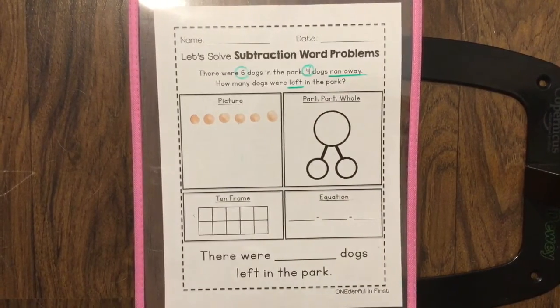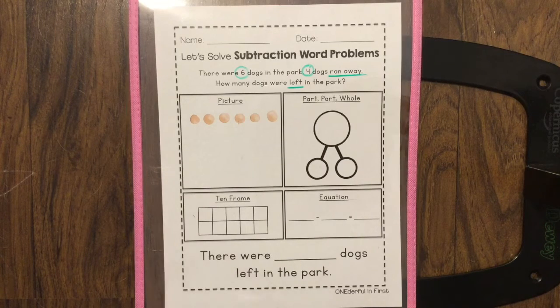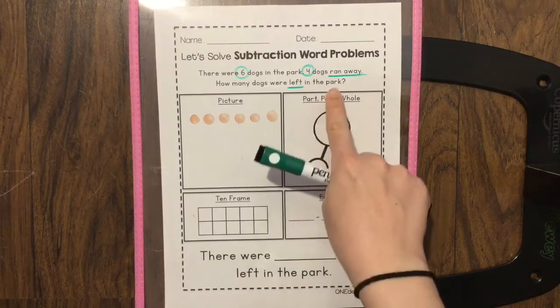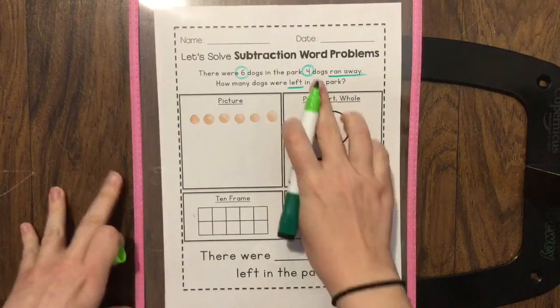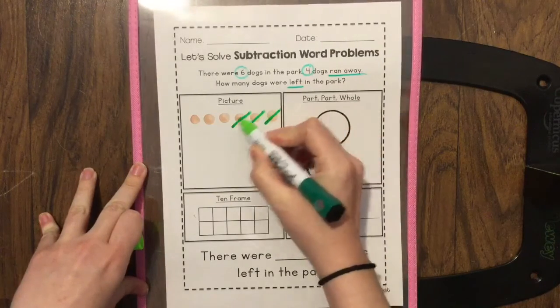Now it says four of the dogs ran away. If they ran away that means they're not there anymore. They're no longer in the park. So I'm going to cross out four of the dogs. One, two, three, four.